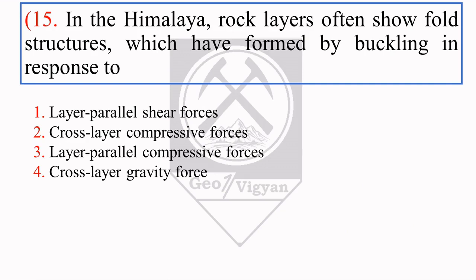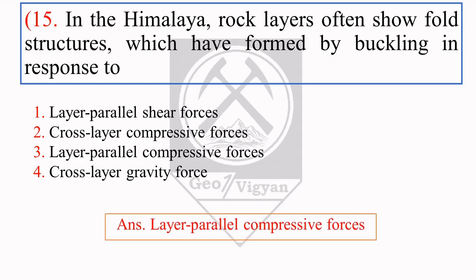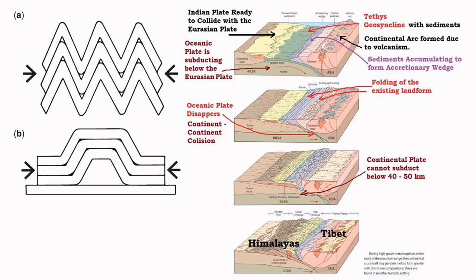The next question: in the Himalaya, rock layers often show fold structures which have formed by buckling in response to what? Buckling is a fold process in which layers are subjected to layer-parallel compression. By the definition of buckling, Himalayan rock layers show fold structures formed by layer-parallel compressive force. As shown in the diagram, buckling occurs under layer-parallel compression. So the right answer is layer-parallel compression force.